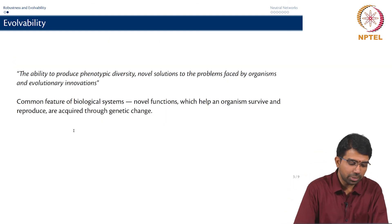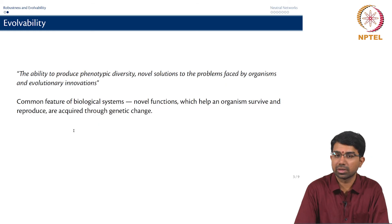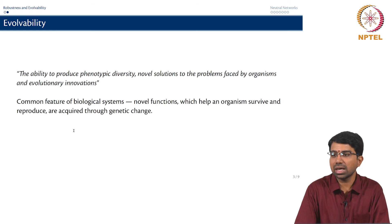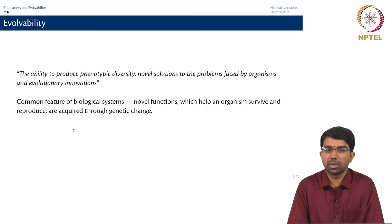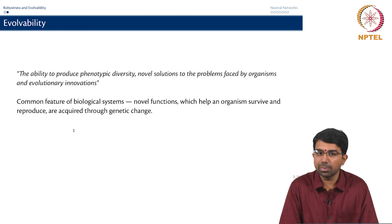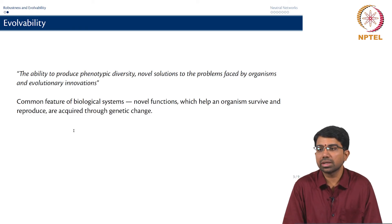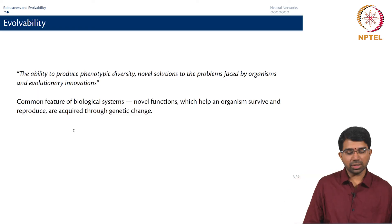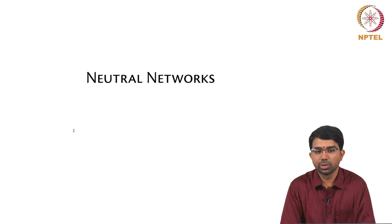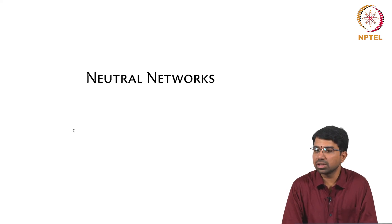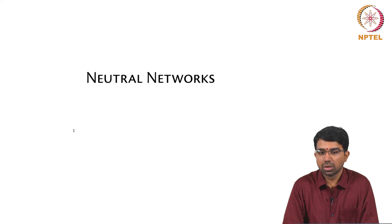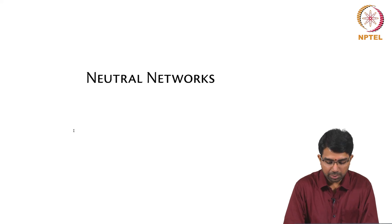What is evolvability? Evolvability is the ability to produce phenotypic diversity, novel solutions to the problems faced by organisms, as well as evolutionary innovations. This is a common feature of biological systems whereby novel functions that help an organism survive and reproduce are acquired through mutation or any other genetic change. To understand how robustness and evolvability coexist, let us look at the concept of neutral networks, which is very central to our whole understanding of robustness and evolvability in biological systems.